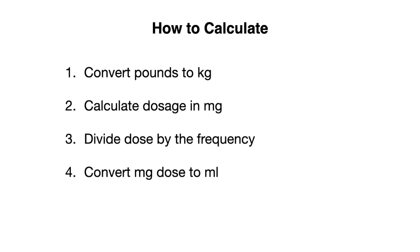If you're provided a weight in pounds, you first need to convert to kilograms, then calculate the antibiotic dosage in milligrams. We then divide that dose by the frequency of the antibiotic, which could be twice a day or three times a day, and then convert the milligram dosage to milliliters depending on the antibiotic suspension strength.